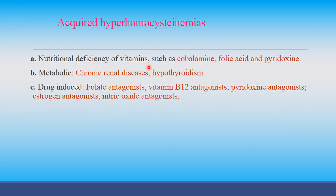Acquired hyperhomocysteinemia: nutritional deficiency of vitamin B12 (cobalamin), folic acid, and pyridoxine. Metabolic causes include chronic renal disease and hypothyroidism. Drug-induced causes include folate antagonists, vitamin B12 antagonists, pyridoxine antagonists, estrogen antagonists, and nitric oxide. Administration of any such drugs may cause homocysteinuria.